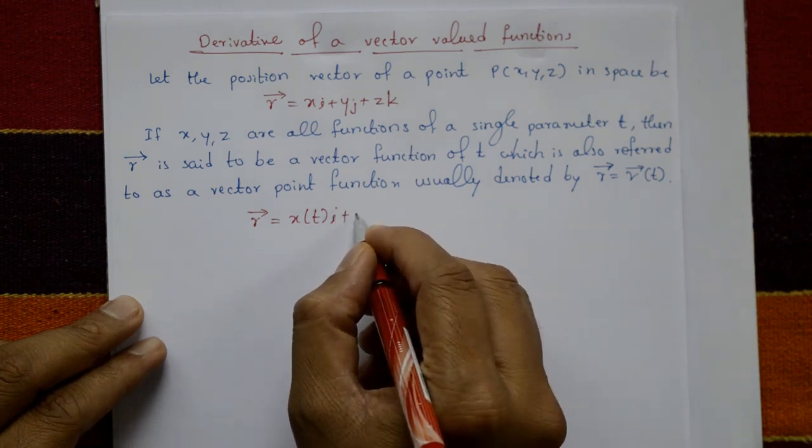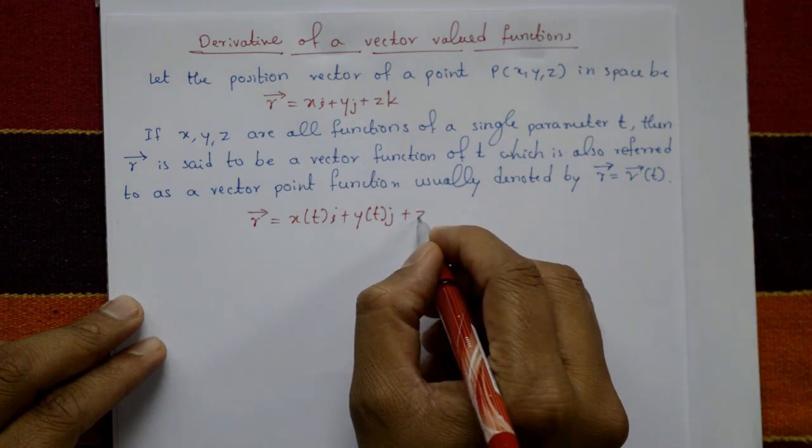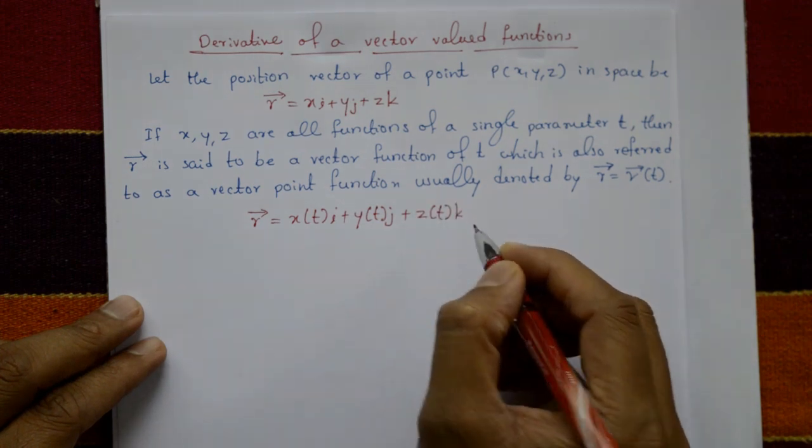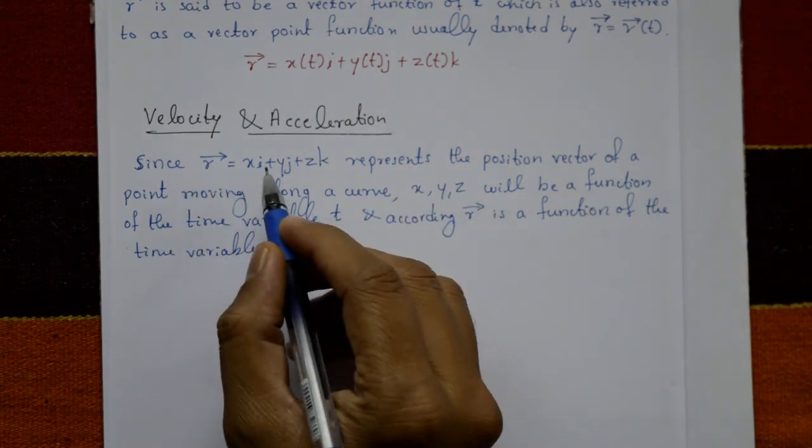That means vector r = x(t)i + y(t)j + z(t)k.